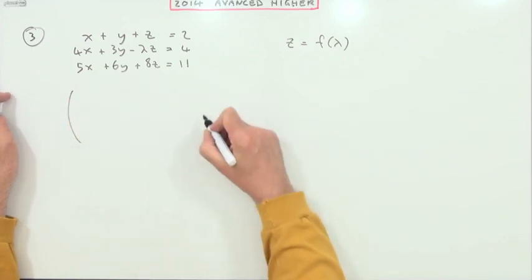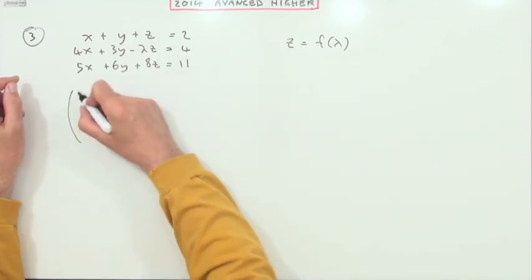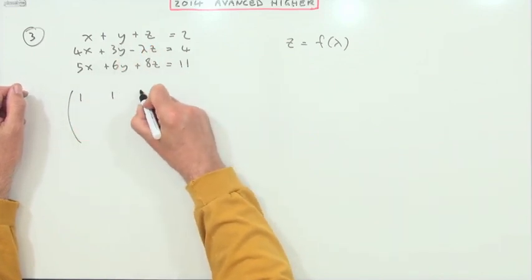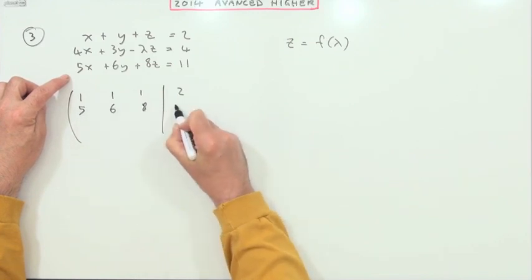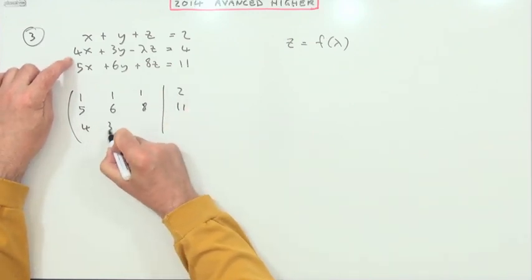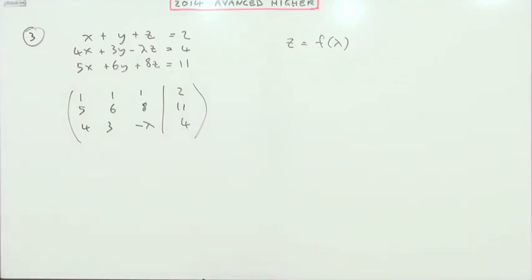I'm going to put down an augmented matrix, but I think if I want z, I'd rather have that at the bottom. So I'm going to rearrange the terms: one one one two, I'll do this one next, five six eight eleven, and then I'll put the four three negative lambda with the four at the end.